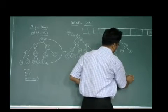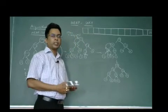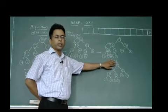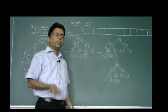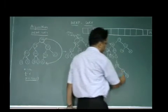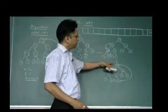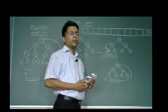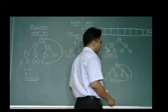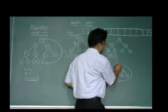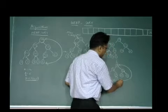After heapifying, the heap now looks like: 17, 13, 11, 10, 12, 6, 5, 7, 4, 3, 2. Every node is satisfying the max heap property. We then repeat the procedure: swap the first node with the last node. After swapping, 13 goes to root position and 17 is at the last position, which is then removed and placed in the sorted array.